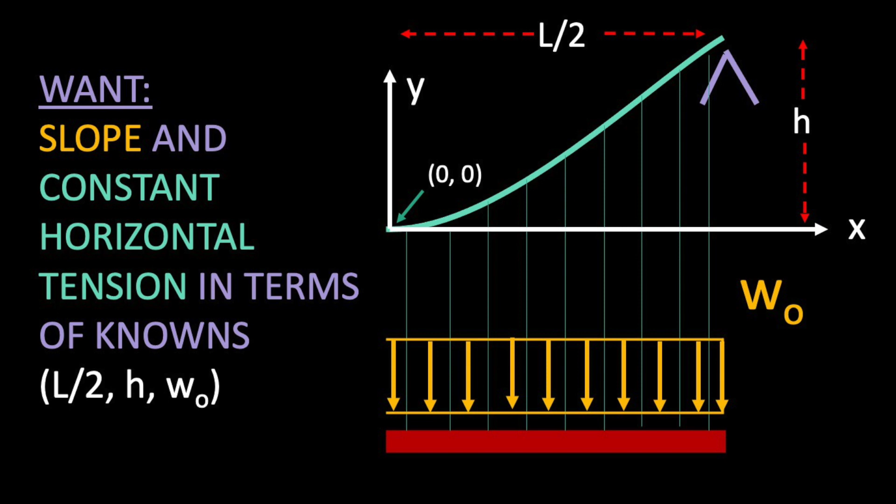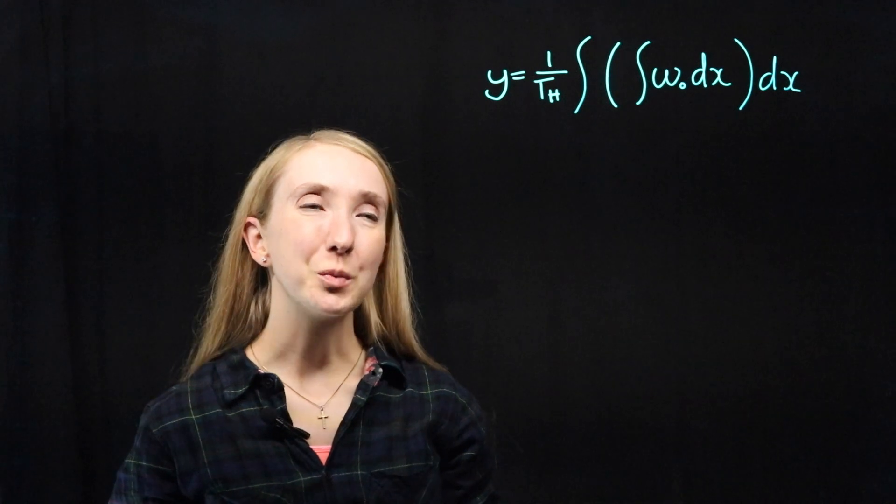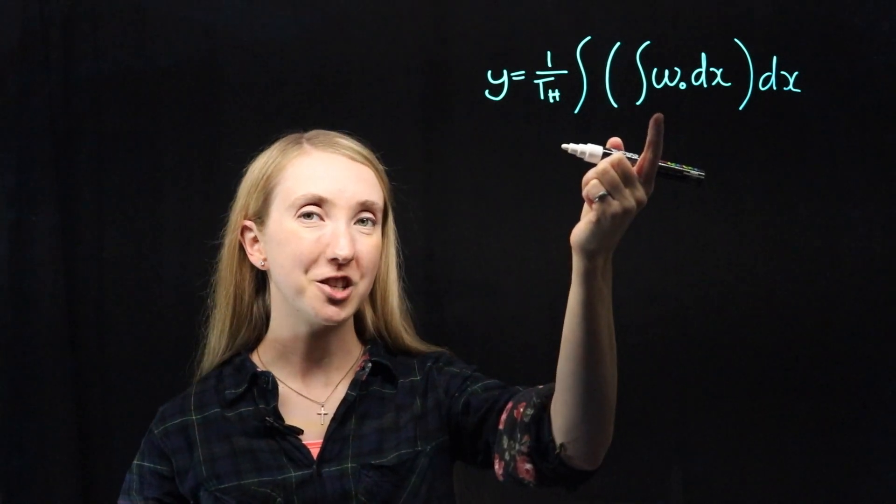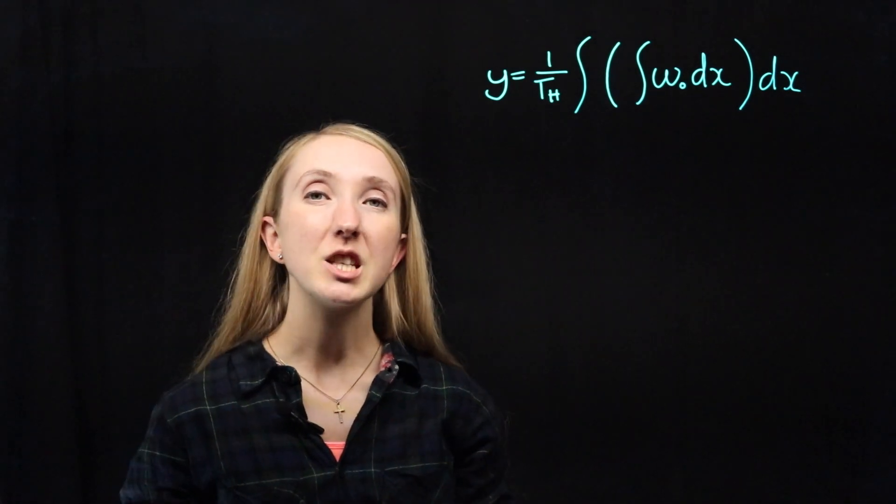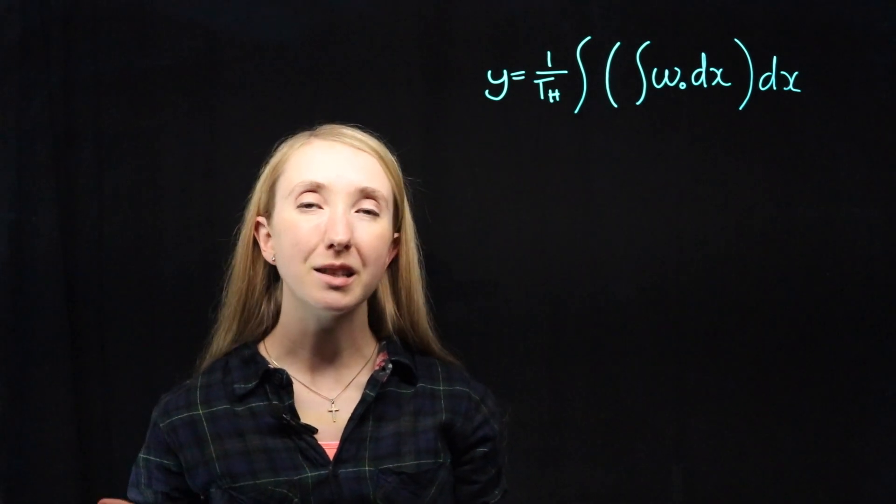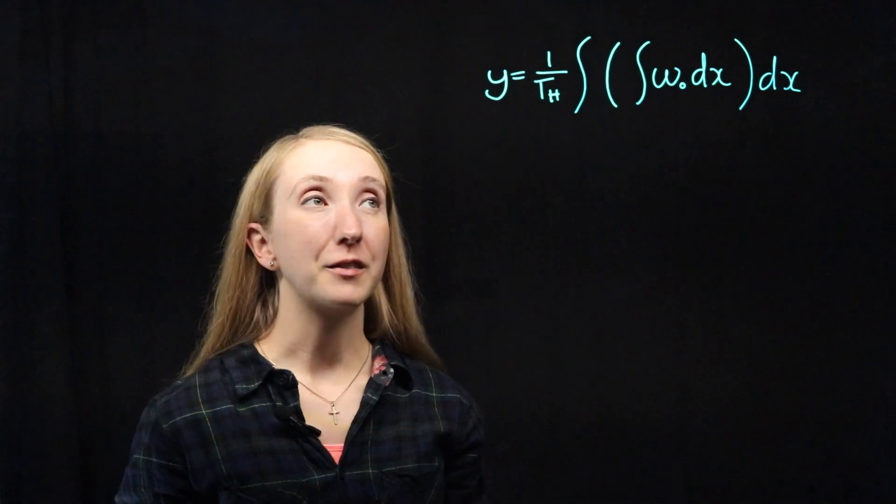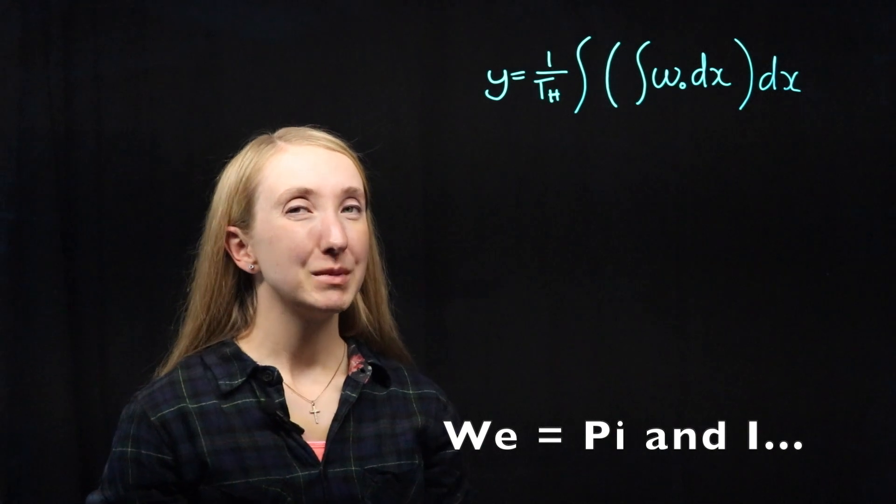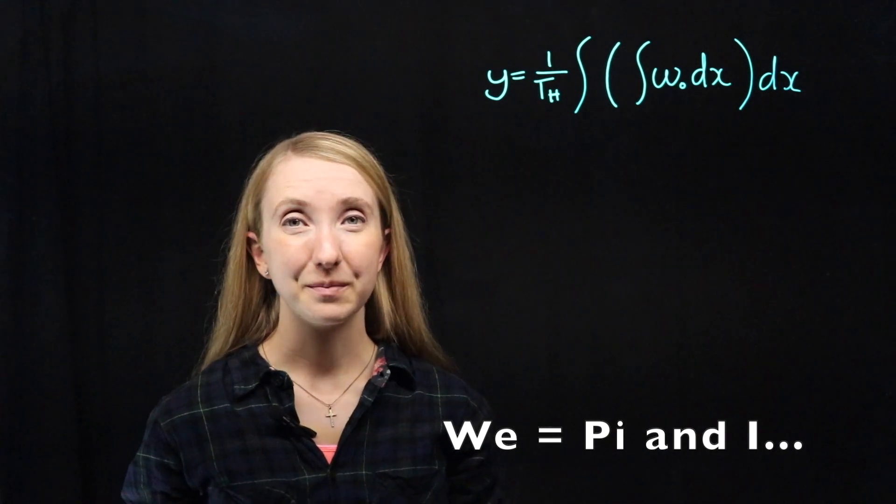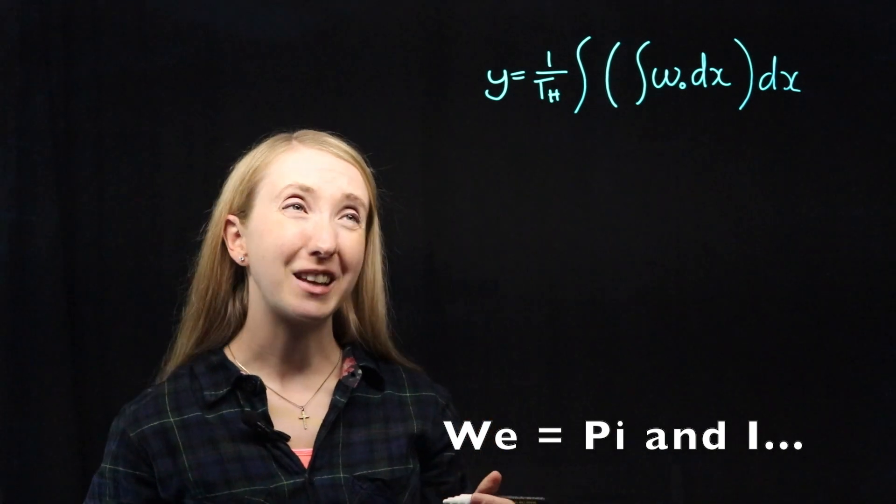This adventure starts with us building two tools for later. We want a function for the slope of our cable and to know what our horizontal tension is. Let's start with the slope. This is our shape equation. Note that w of x has been replaced with w naught. That's because we have uniform loading, which means it's constant and not a function of x. Now, we don't like calculus, but sometimes it's a necessary evil. So let's integrate this sucker.